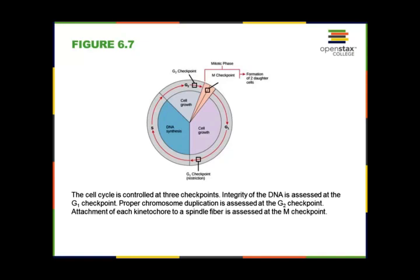This diagram shows where the various checkpoints occur: the G1 restriction point is toward the end of G1 phase, the G2 checkpoint is toward the end of G2 phase, and the M checkpoint occurs right in the middle of mitosis at the end of metaphase.